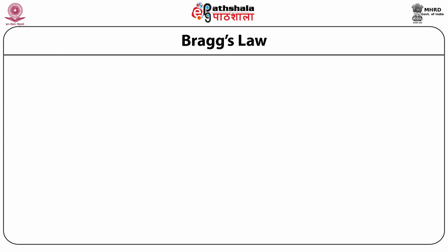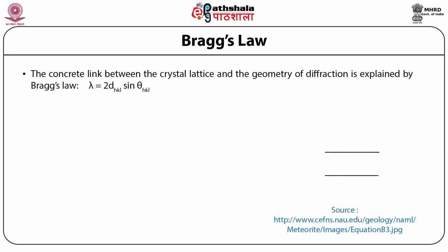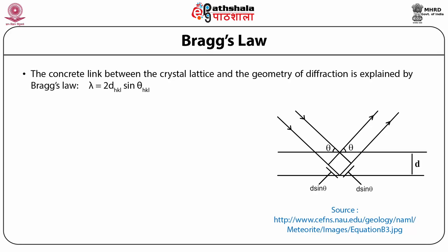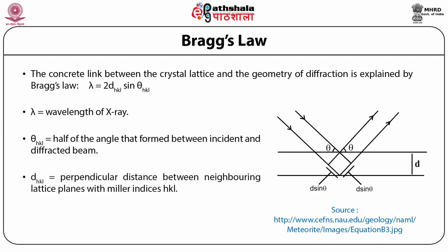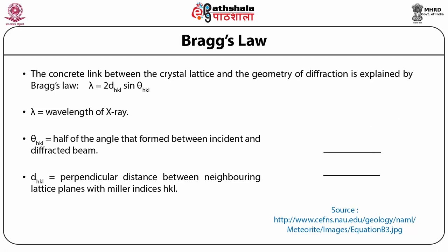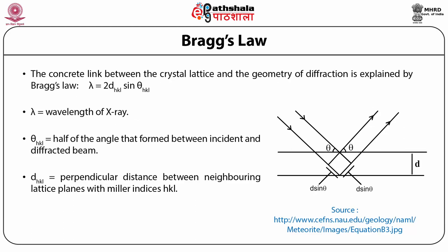There are two laws that explain conditions for diffraction. Bragg's law is a simple model explaining the conditions required for diffraction and provides the concrete link between the lattice and the geometry of diffraction. Bragg's law is: lambda equals 2 D_HKL sin(theta_HKL), where lambda is the wavelength of X-rays, theta_HKL is half of the angle formed between the incident and diffracted beam, and D_HKL is the perpendicular distance between neighboring lattice planes. For parallel planes with spacing D_HKL between them, constructive interference occurs only when Bragg's condition is satisfied. In diffractometers, the X-ray wavelength is fixed; consequently, each set of planes produces a diffraction peak whose intensity is determined by those planes.